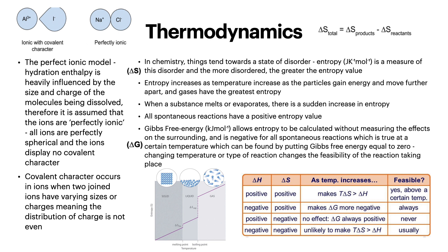The perfect ionic model: hydration enthalpy is heavily influenced by the size and charge of the molecules being dissolved. Therefore it is assumed that the ions are perfectly ionic, all ions are perfectly spherical, and the ions display no covalent character. You can see in the image above what is meant by ionic with covalent character versus perfectly ionic. Covalent character occurs in ions when two joined ions have varying sizes or charges, meaning the distribution of charge is not even.